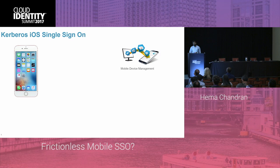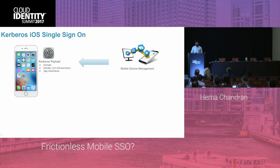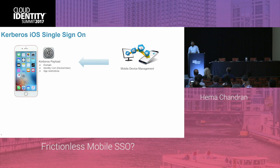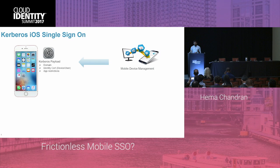We require a mobile device management system. What the MDM does is push a Kerberos payload configuration. That payload configuration has three important pieces of information. First is the domain information. Second is the identity certificate - whether a device cert or a user certificate - to identify the user or the device. Third is app restriction: which apps can use this Kerberos payload. When you push this Kerberos payload configuration to the mobile device, you have to make sure only certain apps can use it, not all apps on your phone.